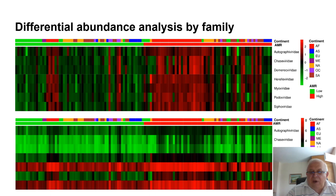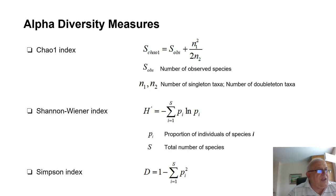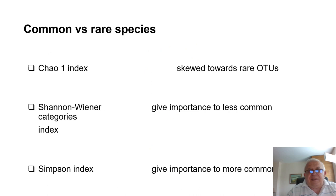We further assessed the diversity and introduced two approaches: alpha diversity measures for count data, and beta diversity measures for continuous data. For alpha diversity measures, we use three different indices: Chao index, Shannon index, and Simpson index. Shannon is related to entropy. As a result, both Chao and Shannon put emphasis on less common taxa, while Simpson emphasizes more frequent taxa. In other words, we assess the relationship between common and rare species.